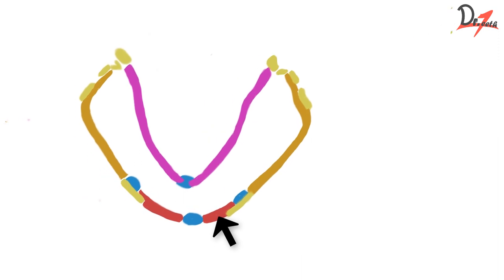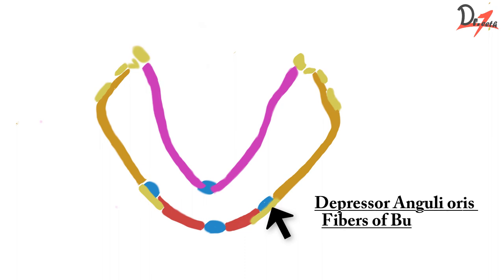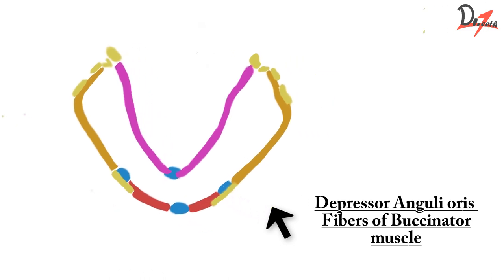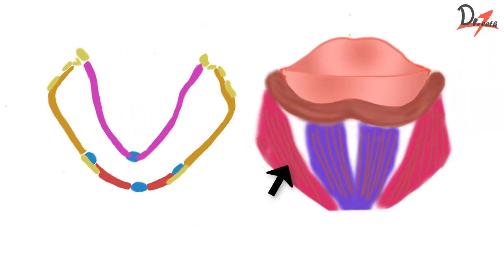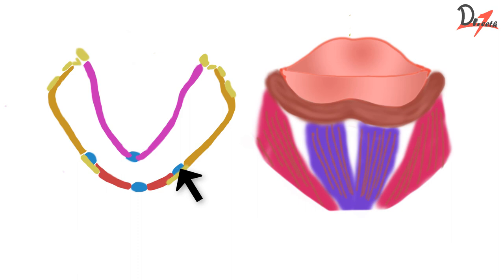Now let's see the buccal frenum. It is influenced by two muscles: depressor anguli oris and the fibers of the buccinator muscle. At the same time, the buccal vestibule is also influenced by the buccinator muscle. You need to relieve your buccal frenum in dentures; otherwise it will cause displacement of the denture during movement.